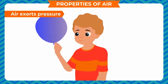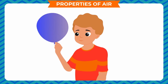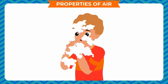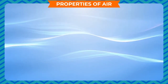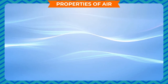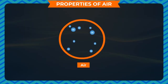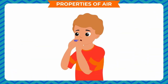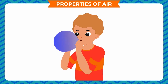Air exerts pressure: from the balloon activity, we can know that if you blow more and more air into the balloon, it bursts. This is because air exerts pressure. The molecules of air continually collide with each other and hit the surface of the balloon. When these molecules hit, they exert a small force on the surface. The sum of all these forces results in the pressure exerted by the gas on the balloon.